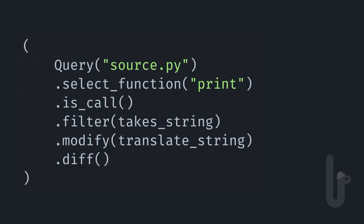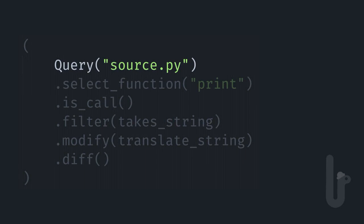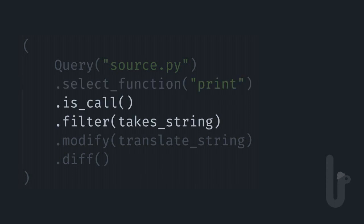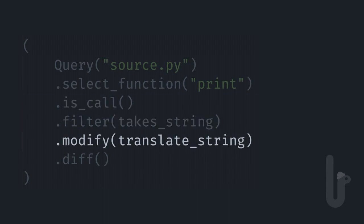The way this would look with the fluent API is method chaining off of a single object. You would start the pipeline by creating the query object and telling it the source file or directory you want to operate on. You use the selector to define what you're matching against — in this case we'll match against any use of the print function. By default, the selector will also find cases where we defined or imported a print function. Then we can filter those results to say we only care about cases where the function is actually being called rather than defined, and add a custom filter to further restrict that to when it has just the one string literal as its argument. Then we can mostly reuse the function we had earlier to do the modification, and ultimately tell it we want to generate a diff.